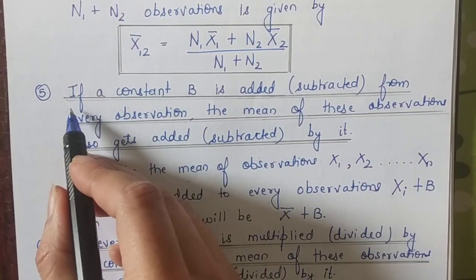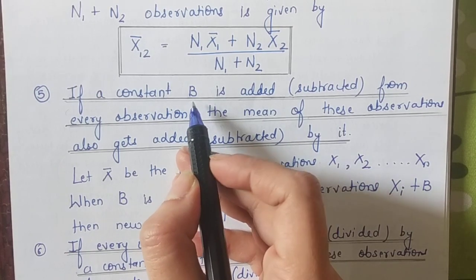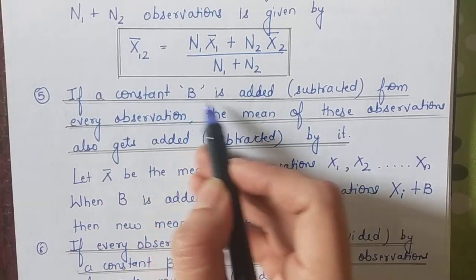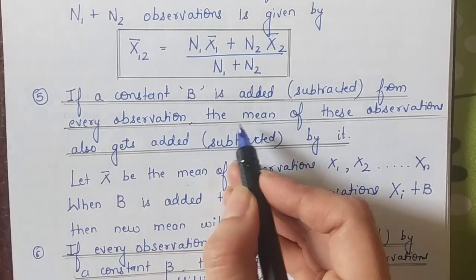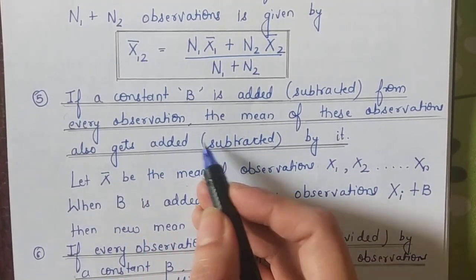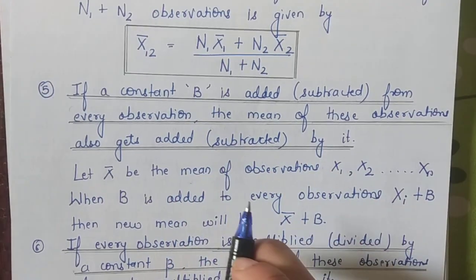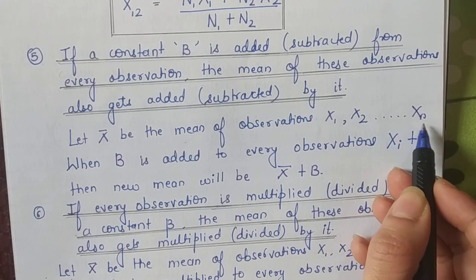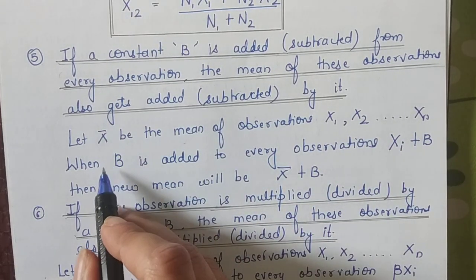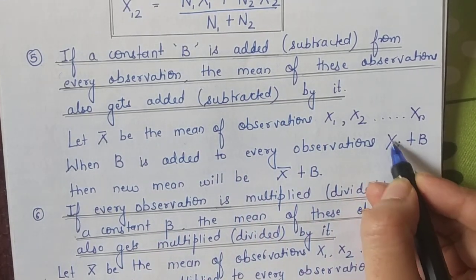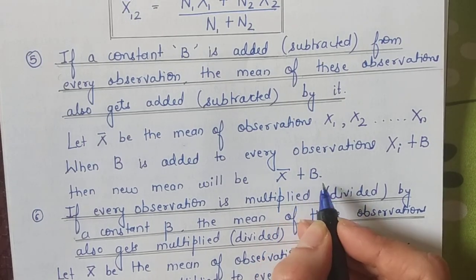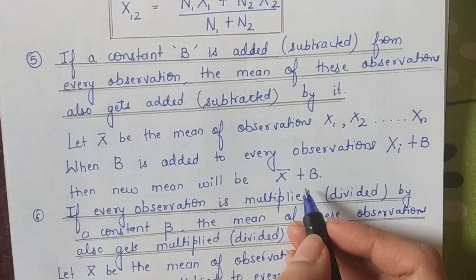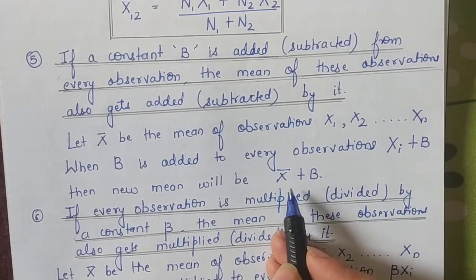Then the fifth property: if we add or subtract a constant B to every element in the series, then the mean will also be added or subtracted by that same constant B. Let your mean be x̄ and observations be x₁, x₂...xₙ. Now when B is added to every observation, the new observations become xᵢ + B. Then your mean will also become x̄ + B.